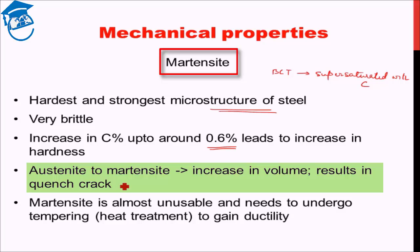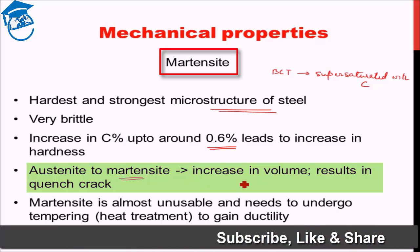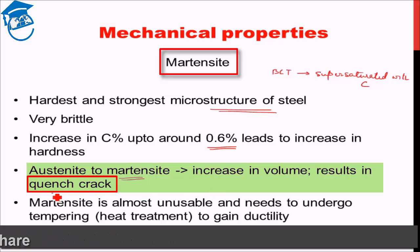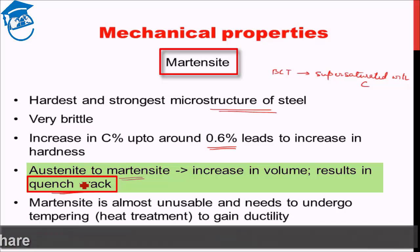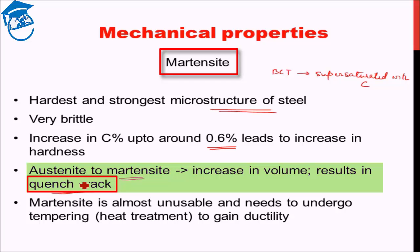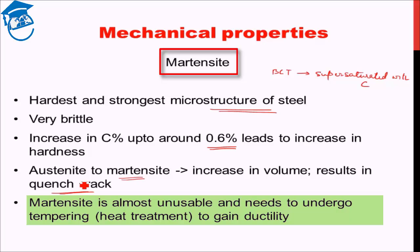Austenite to martensite conversion is an increase in volume conversion. Martensite is less dense than austenite, so martensite formation leads to an increase in volume, and that expansion can lead to what is known as quench cracks. As we suddenly cool the material to form martensite at low temperature, this increase in volume can lead to cracking. For most practical applications, the martensite obtained just after quenching is almost unusable because of its very high brittle nature.